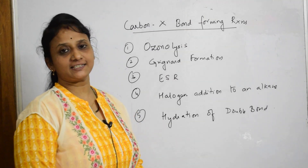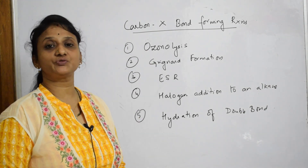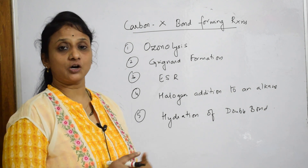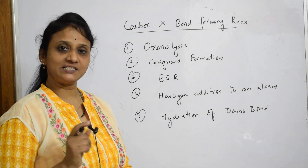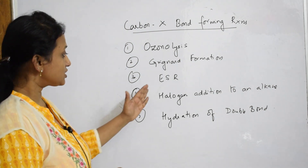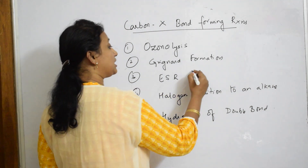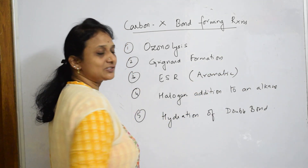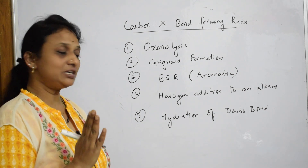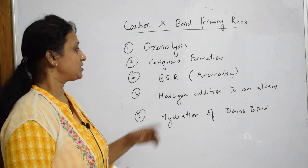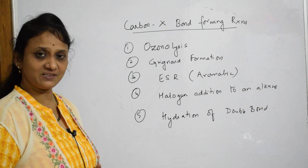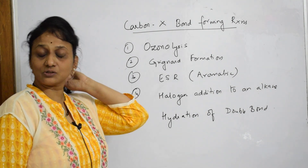The second category in the organic toolbox is carbon-X bond formation reactions. Reactions here include: ozonolysis, where O₃ is added across a double bond giving an ozonide; Grignard formation, where RMgX is added; and electrophilic aromatic substitution reactions — nitration, sulfonation, acylation, alkylation — all of which come under carbon-X bond formation. For nitration, for example, we use a nitrating mixture where NO₂ is added to the benzene ring.